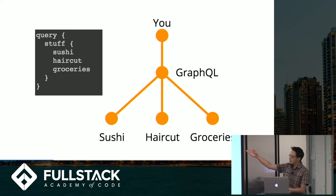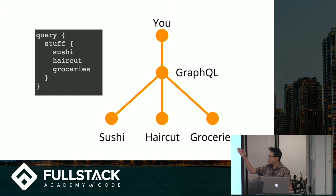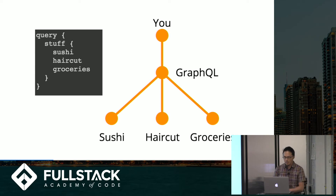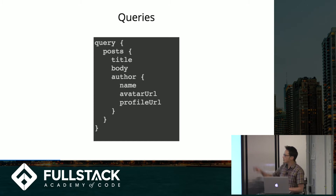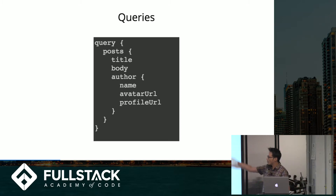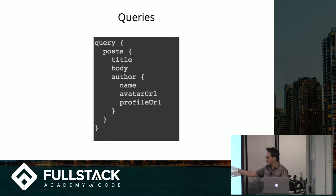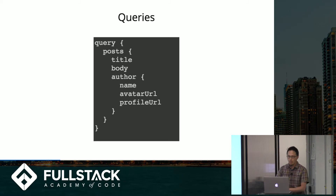The query syntax looks like this: 'query' is a keyword, and 'stuff' would be the field. Within 'stuff' you say get me the sushi, the haircut, and the groceries. For a more realistic example, if you're querying posts — which is actually an array — this would give you an array of posts with fields: title, body, and author. You can nest it too; author could also be an array where you're calling for specifically name, avatar URL, and profile URL within that.